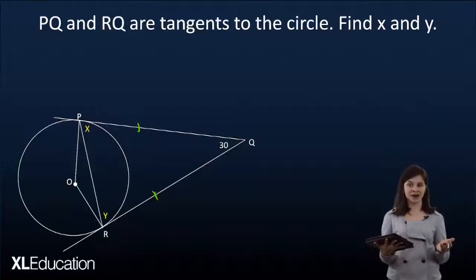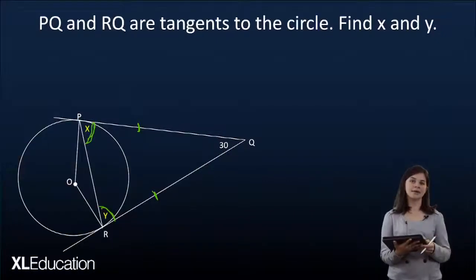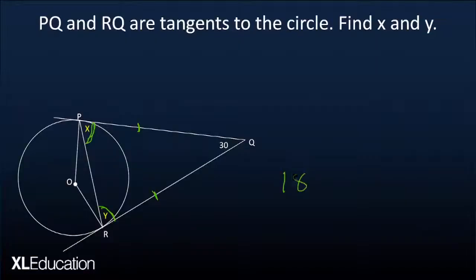Now I've got a triangle PRQ and what do I know about a triangle that has two equal sides? It's an isosceles triangle. So I know that x and y are going to be equal. They're going to be the same angle. I've also been given that Q is 30 degrees. So having a triangle with three angles, I know that that's going to equal 180 degrees.